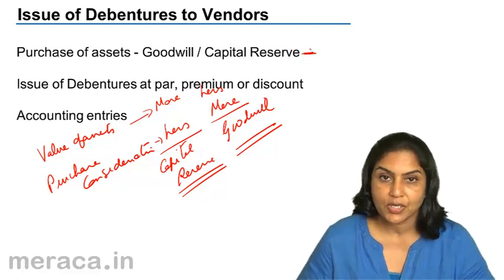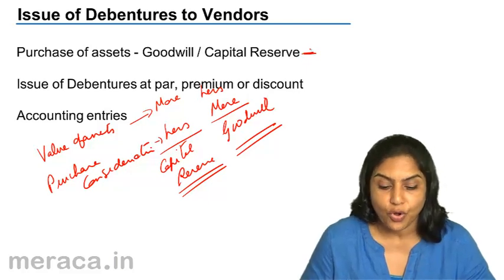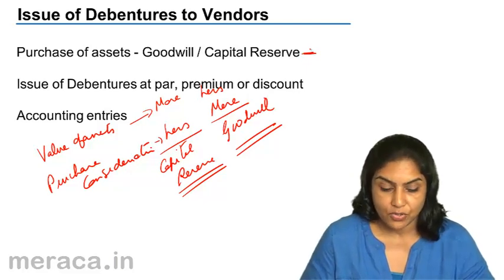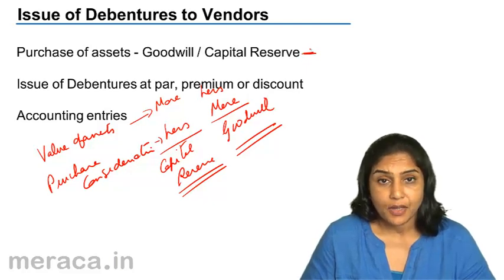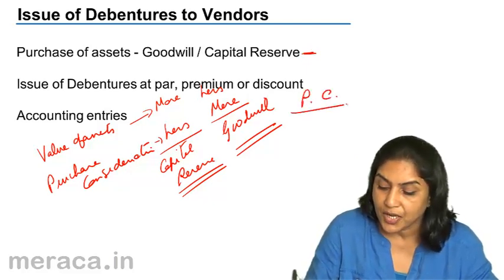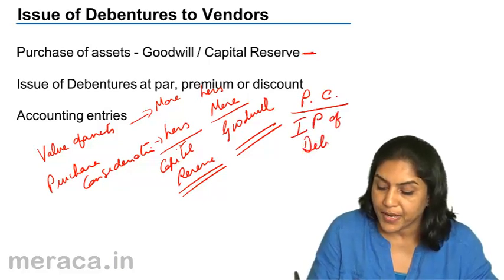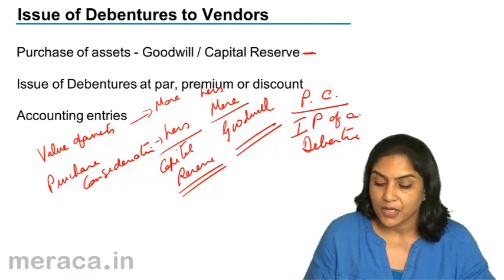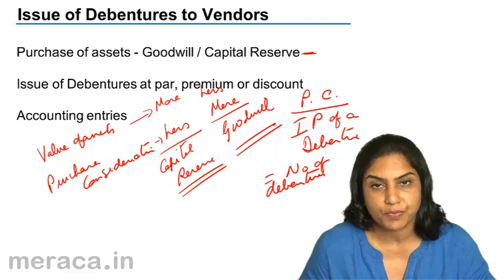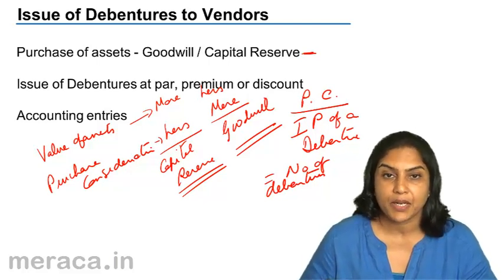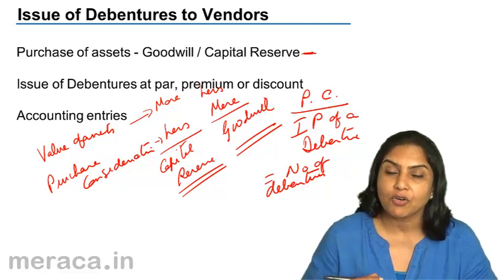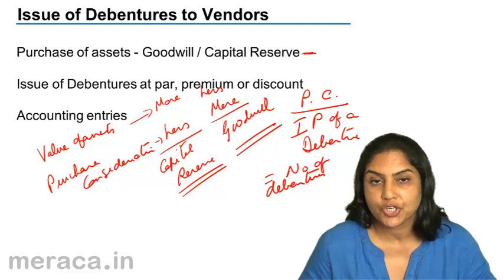Next, this purchase consideration, which is to be paid to the vendor, is settled by the issue of debentures. In order to find out the number of debentures to be issued, we divide the purchase consideration by the issue price of the debentures. The accounting entry is: Vendor account debit to Debentures, to Securities Premium if the debentures are issued at a premium, or Discount on Issue of Debentures account debit if the debentures are being issued at a discount.